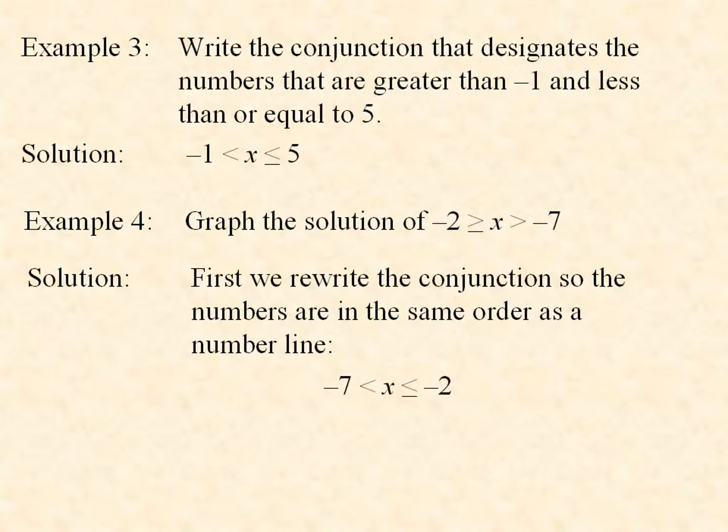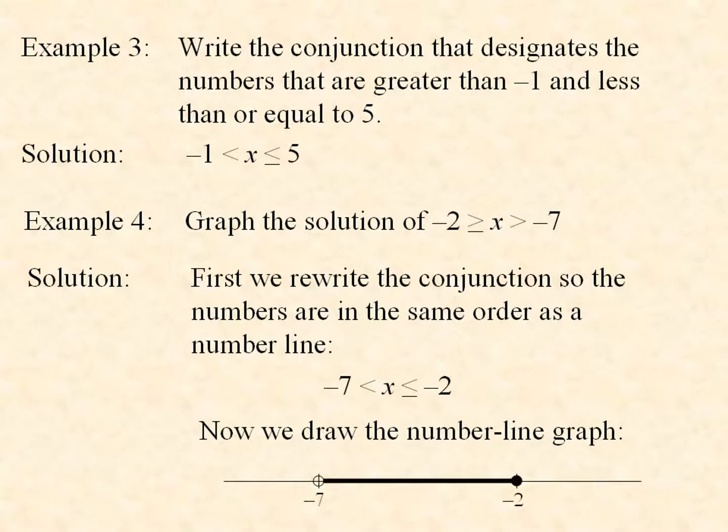And then it becomes this inequality: -7 < x ≤ -2. So x is between -7 and -2, and it can include -2. So we draw the number line graph with a solid circle at -2 and an open circle at -7.